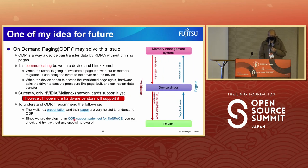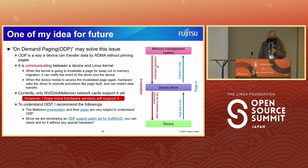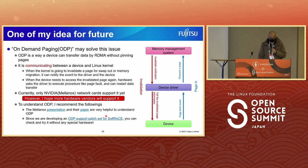One of my ideas for a future solution: On-Demand Paging may solve this issue. ODP is a way for a device to transfer data by RDMA without pinning pages — it communicates between the device and the Linux kernel. When the kernel is going to invalidate a page for swap or memory migration, it notifies the event to the driver and device. When the device needs to access the invalid page again, hardware asks the driver to execute a page-fault-like procedure and can restart data transfer. Currently only NVIDIA network cards support ODP, but I hope more hardware vendors will adopt it. The Mellanox presentation and their paper are very helpful to understand ODP. We are also developing an ODP support patch set for software emulation so you can try it without special hardware.